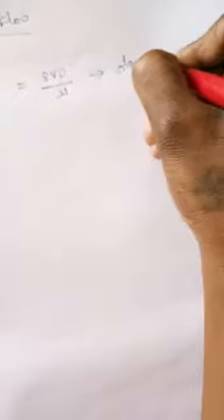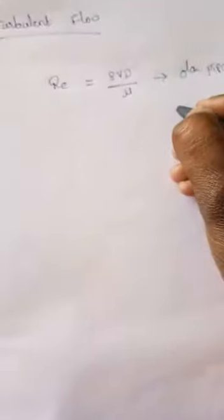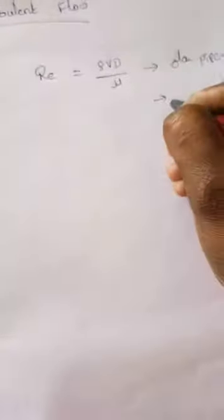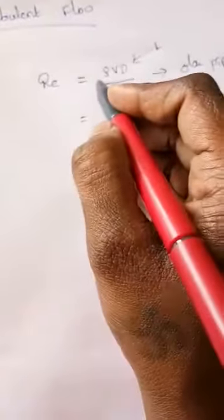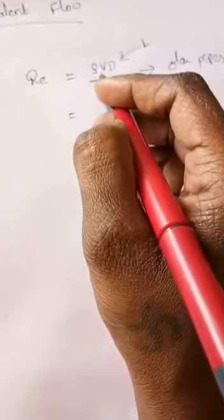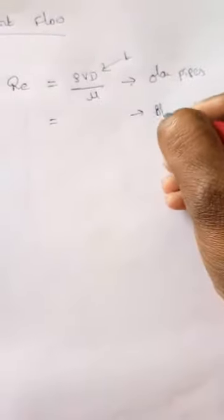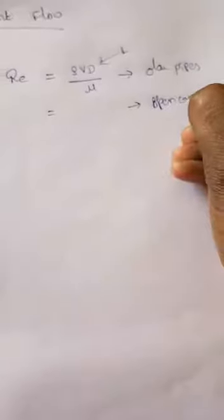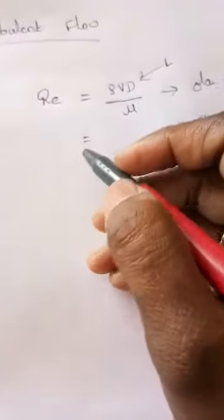This formula is used in case of circular pipes only. If you want to use this for open plates or open channels, then instead of d we replace it with l, that is the length. Here rho is the density of water, v is the velocity, and d is the diameter of the pipe.